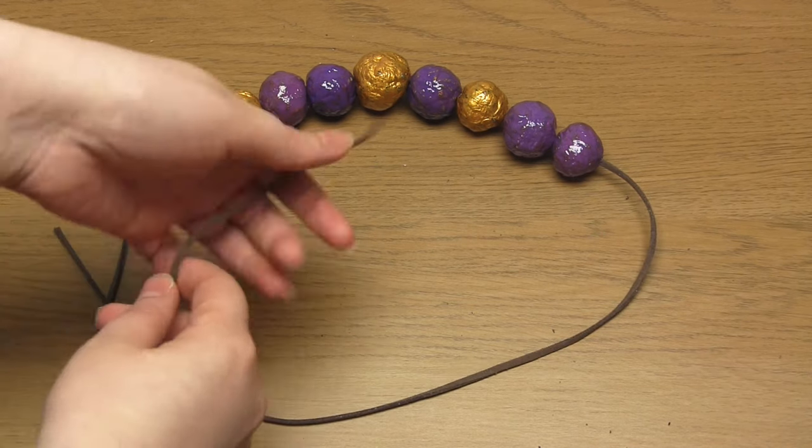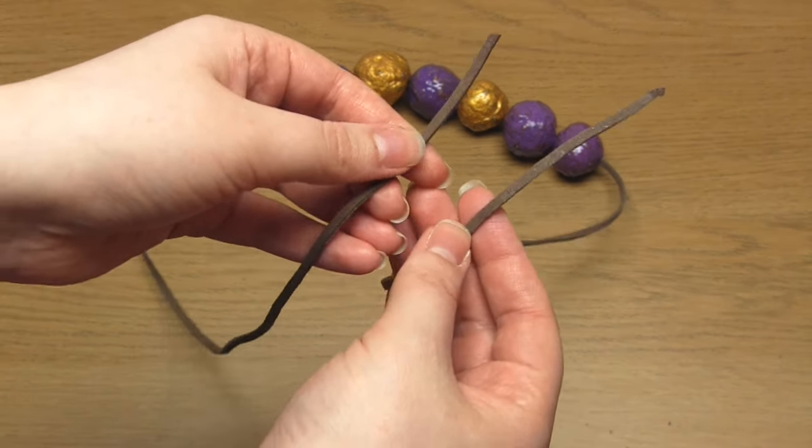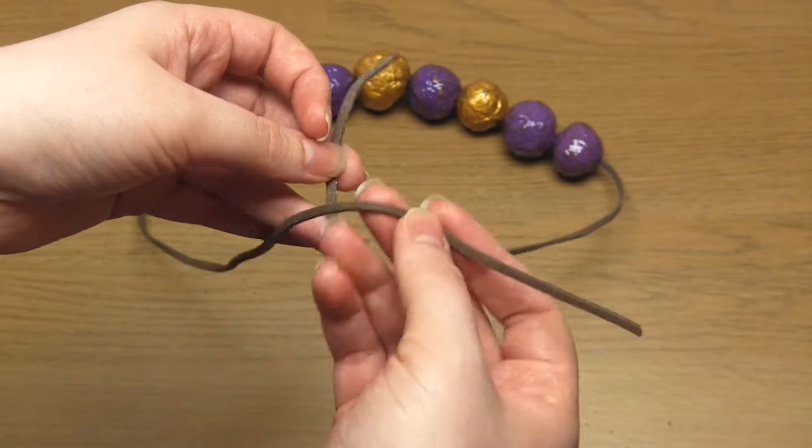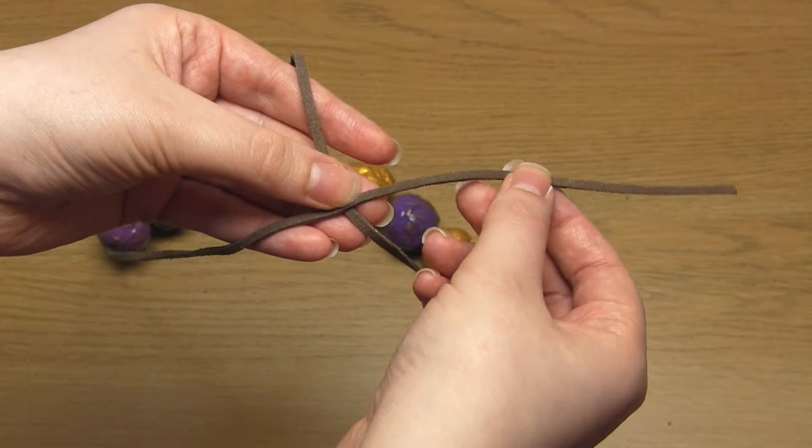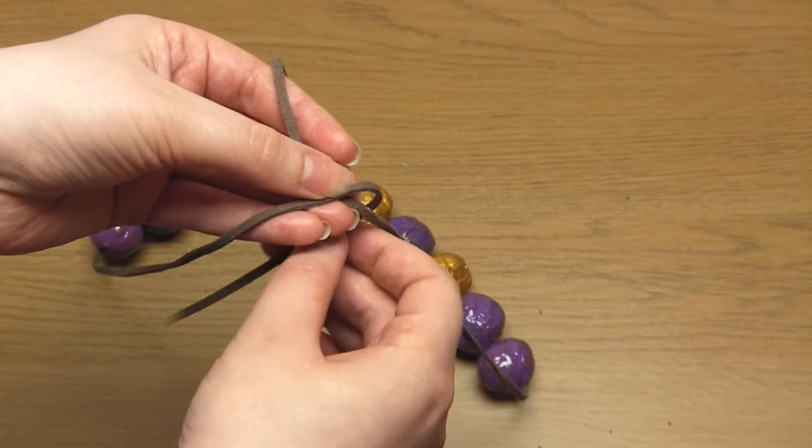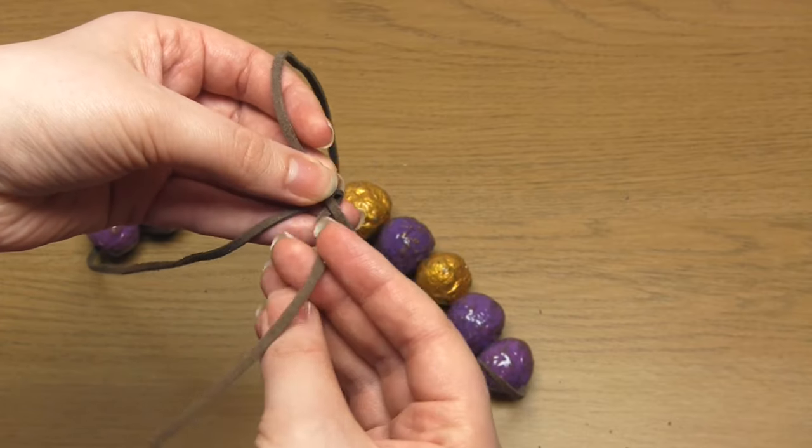So all you need to do is take the left strand of the cord in front of the right strand of cord. Then wrap it around the right strand once and then once more.